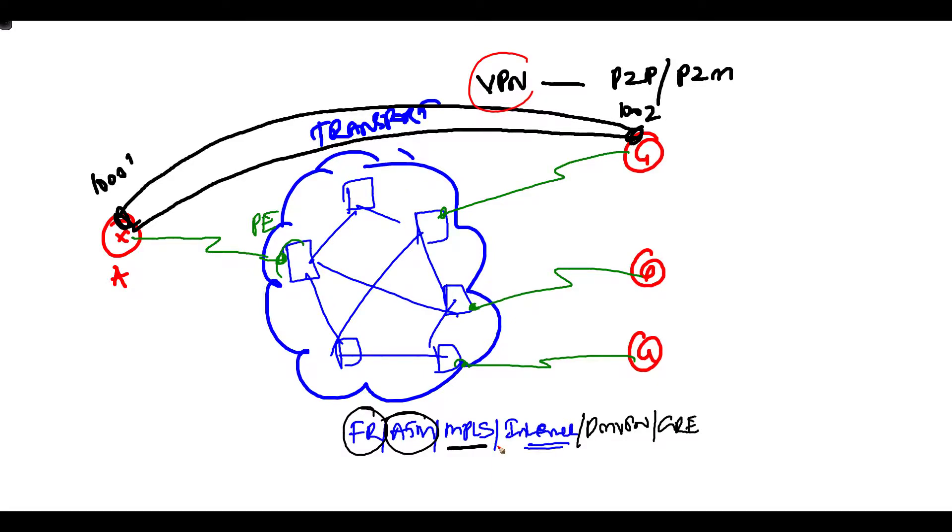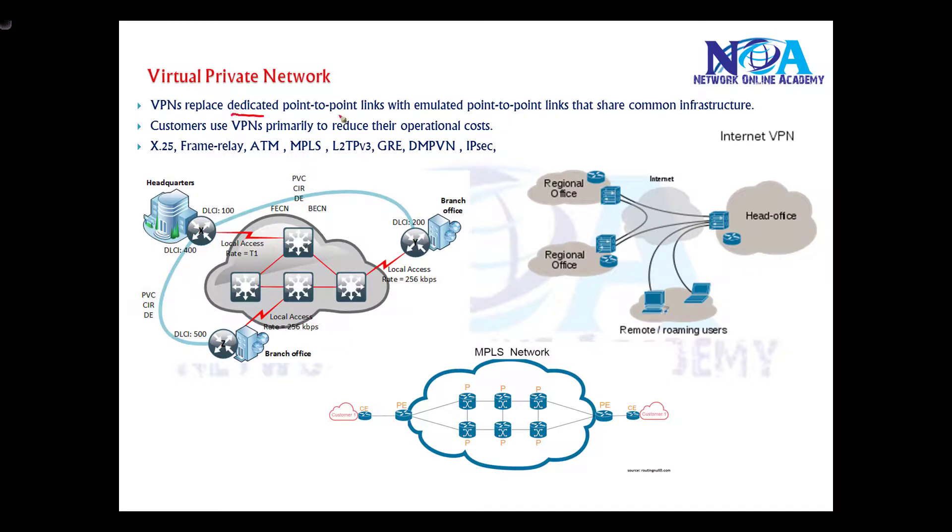VPN is going to replace most dedicated point-to-point lines or lease lines with emulated point-to-point or point-to-multipoint connections under a common infrastructure. This is one example of Frame Relay—the difference is when packets enter, Frame Relay uses DLCI values similar to MAC addresses, layer 2 addresses.